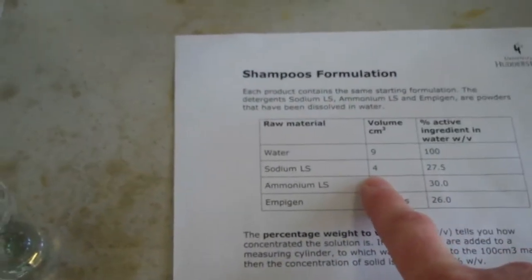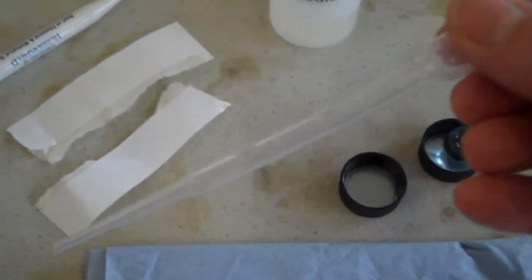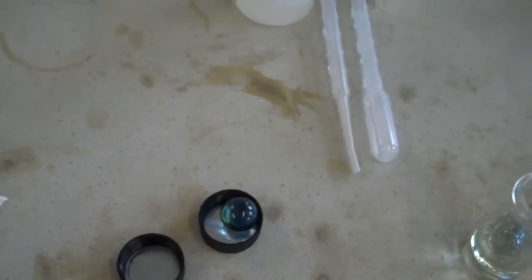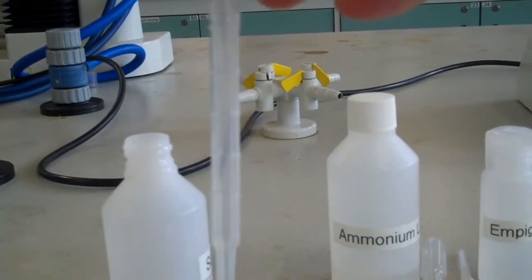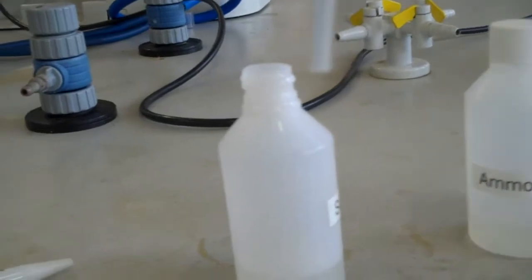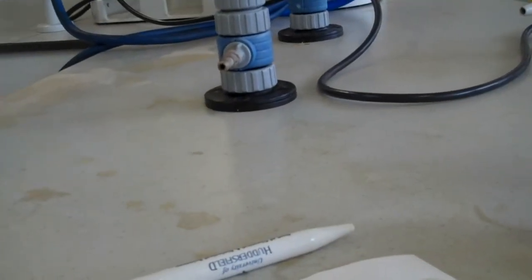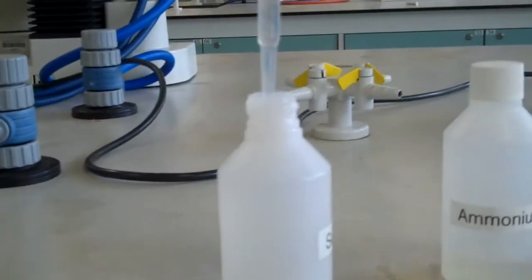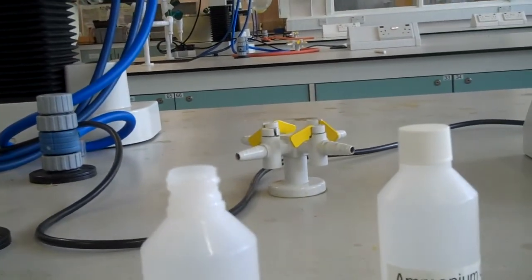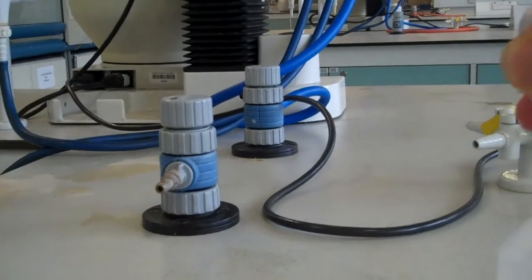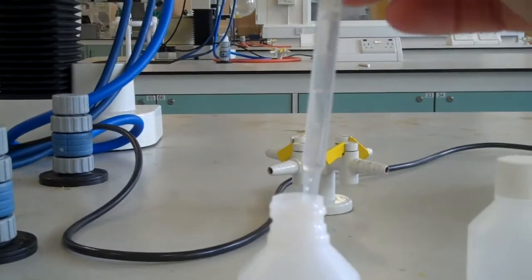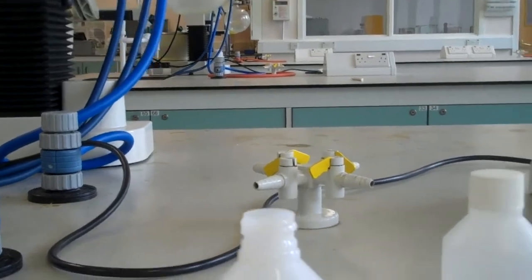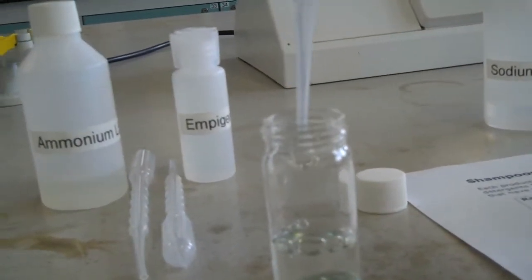So I've added nine centimeters cubed of water, and now I need four centimeters cubed of sodium LS. And for this, we don't use the measuring cylinder. We use a disposable pipette instead. So I'm going to take the top off. And on the disposable pipette, it actually goes up to three centimeters cubed on the mark. So I'm going to use two lots of two centimeters cubed. Sodium LS is quite thick, so you have to wait a little bit. There's two centimeters cubed there. I'm going to pop two in, and I'm going to do a second one. So that I get to four.